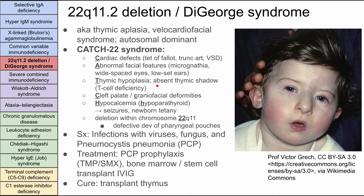Thymic aplasia corresponds to the T cell deficiency — this is the only pure T cell deficiency on the list, though the combined deficiencies also have T cell problems. The C stands for cleft palate and craniofacial abnormalities. The H stands for hypocalcemia from hypoparathyroidism, which can lead to seizures and newborn tetany. The 22 in CATCH-22 reminds you this is chromosome 22q11. The pathophysiology involves defective development of the pharyngeal pouches, explaining the hypoparathyroidism, thymic aplasia, and abnormal facial features.